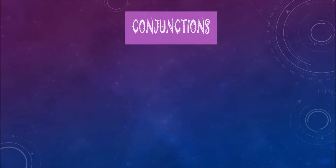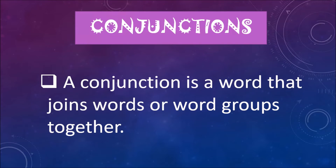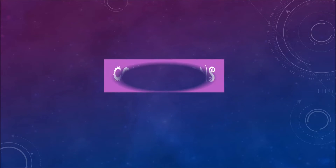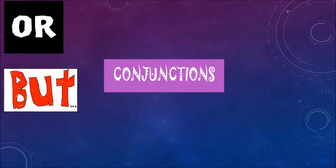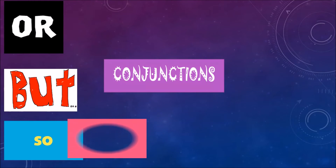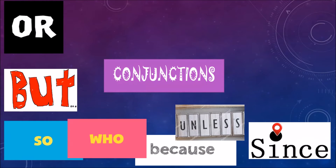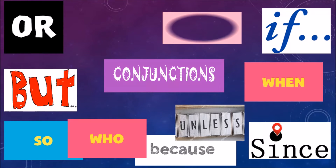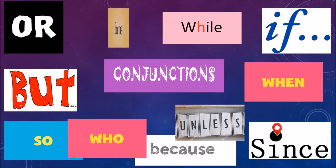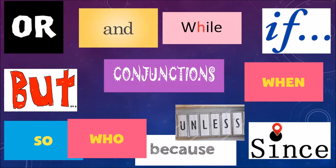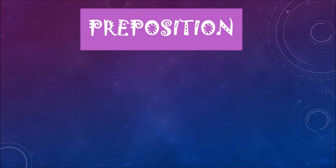Next is conjunction. A conjunction is a word that joins words or word groups together. These are all the words which join two or more sentences together. These are all the examples of conjunctions.